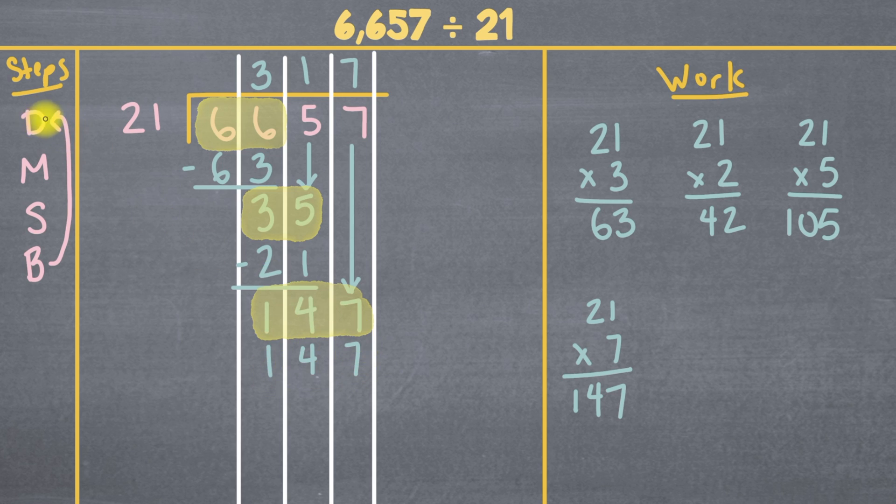So we've done our division. We've done our multiplication over here. Now we have to subtract. So we'll subtract 147 minus 147, and that's going to give us 0. This is important here, because when our remainder is 0 and there's nothing else to bring down, that means we're officially done. So our final answer is 317. You could also say the quotient of 6,657 and 21 is 317.